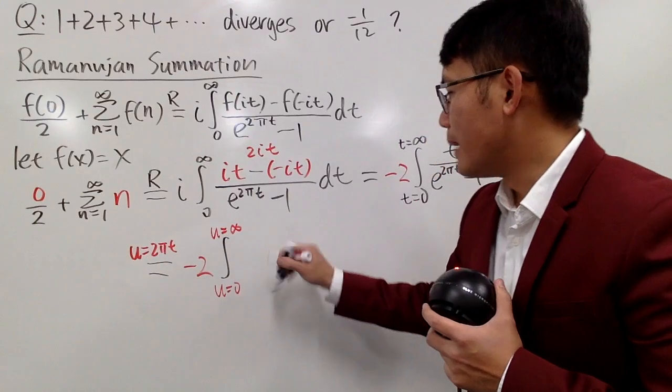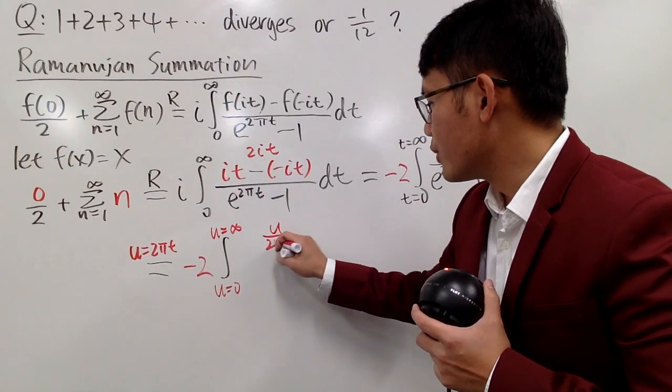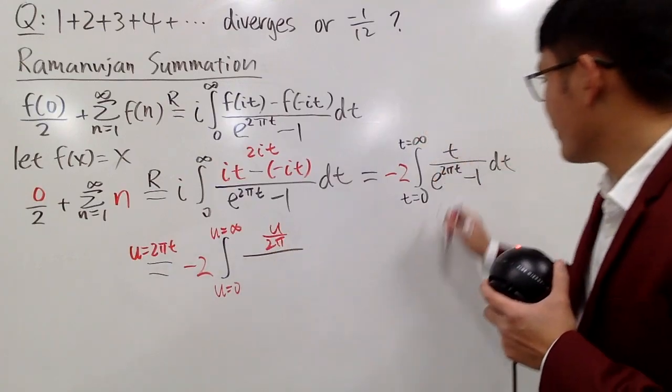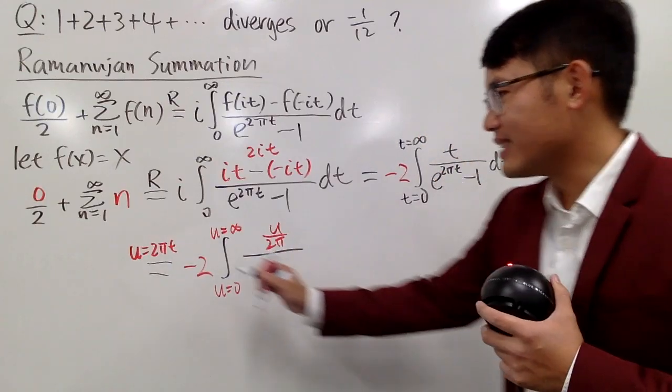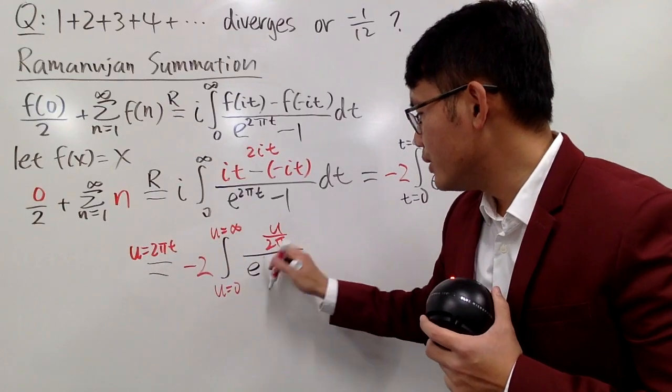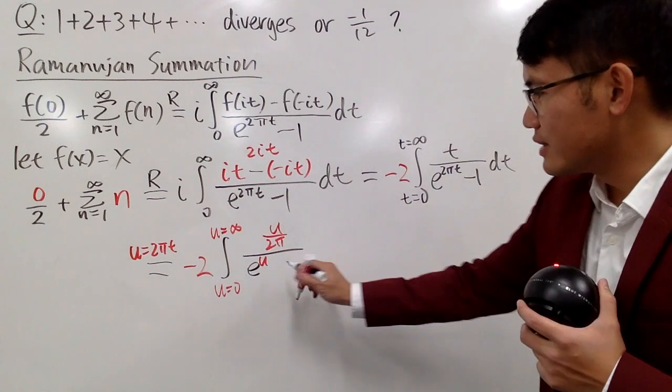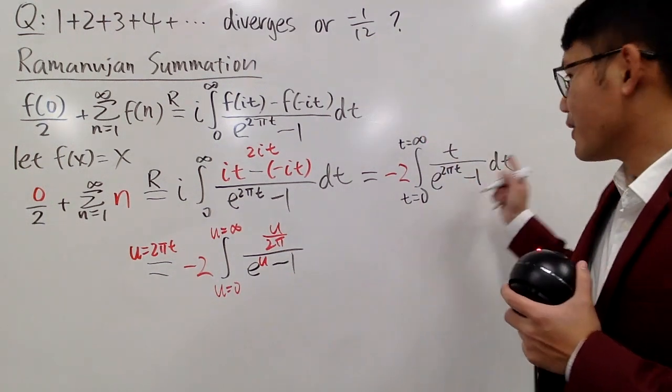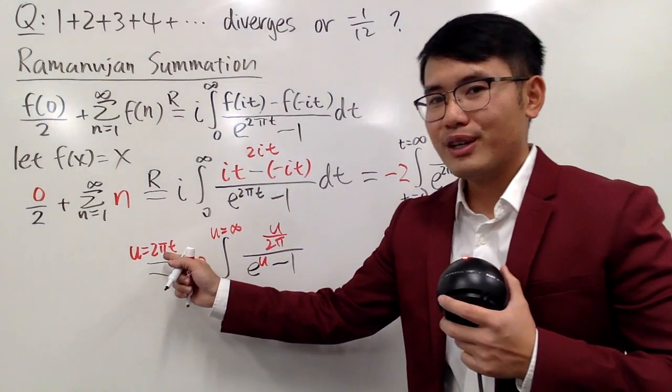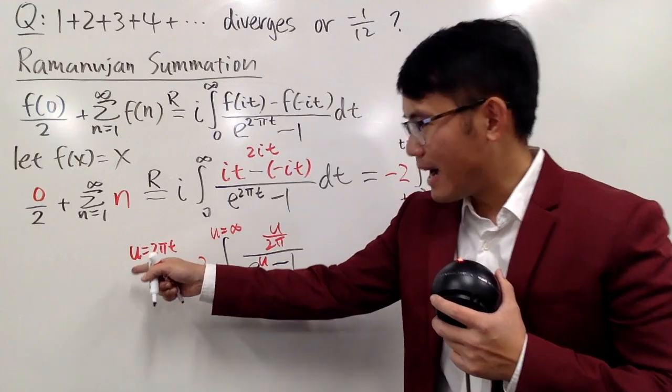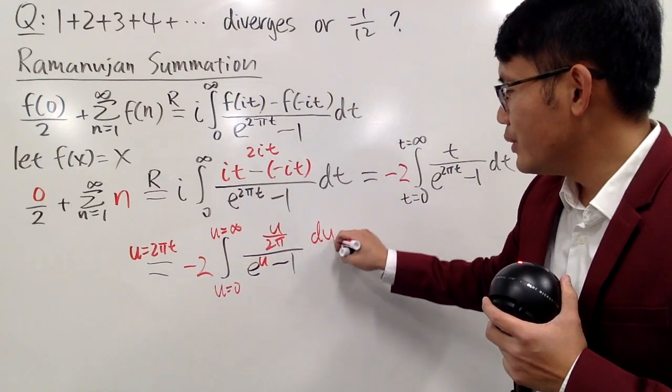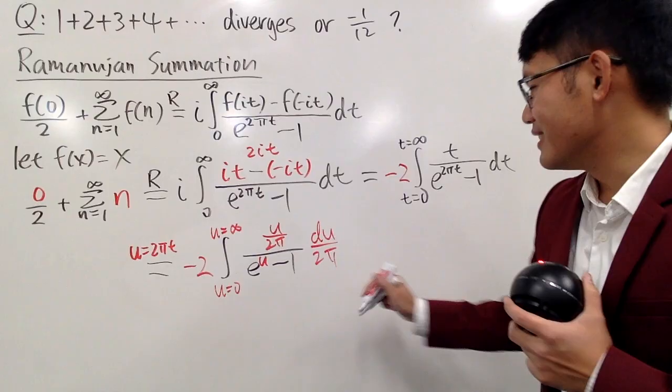t divide both sides by 2 pi, so we get u over 2 pi, over e to the 2 pi t, and that's exactly the u, so we have e to the u, minus 1. And then for dt, you can just divide the 2 pi on both sides, and differentiate both sides, we get du over 2 pi.